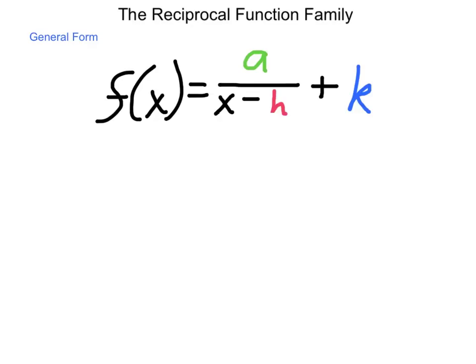In this form, we will have an asymptote — an undefined value — where x equals h, and that's a vertical asymptote. A horizontal asymptote will occur where y equals k. Any transformations from the basic function to our new equations will be based on the same general parameters and ideas set forth in previous lessons. Let's start looking at how to graph some of these functions.